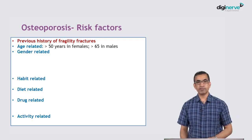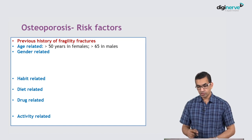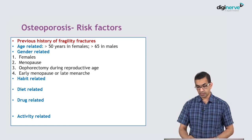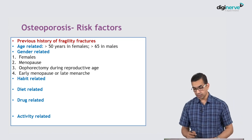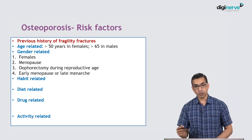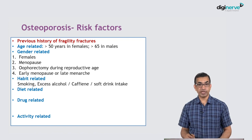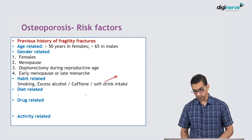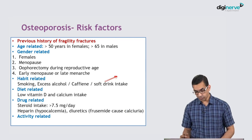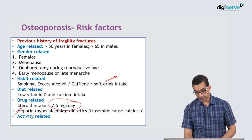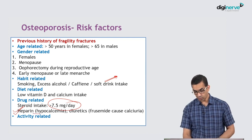Age-related risk: more than 50 years in females and about 60 to 65 in males. Gender-related: females are more prone; menopause is a significant reason, and oophorectomy during reproductive age, early menopause, or late menarche also contribute. Habit-related risks include smoking, excess alcohol, and caffeine or soft drink intake due to phosphate problems. A diet low in vitamin D or calcium is a dietary risk. Drugs like steroids at more than 7.5 mg per day for more than 3 to 6 months can cause osteoporosis. Heparin, commonly given for cardiac and vascular causes, can cause hypocalcemia.